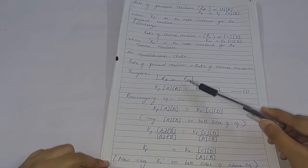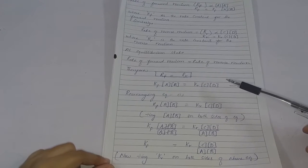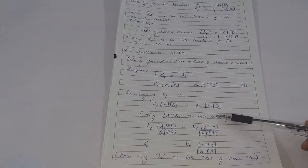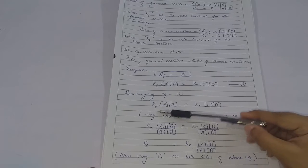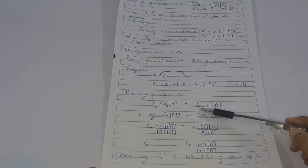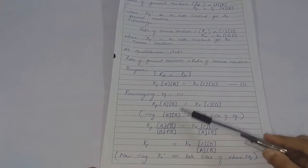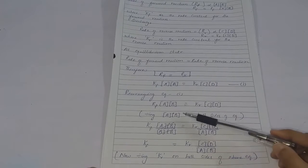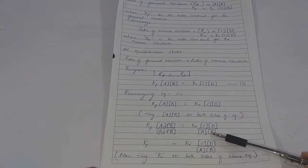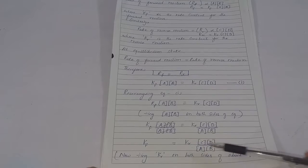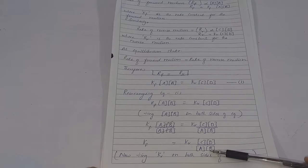Rearranging equation number 1, we get KF × [A][B] = KR × [C][D]. Dividing both sides by [A][B], the equation becomes KF = KR × [C][D] / [A][B].